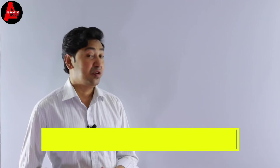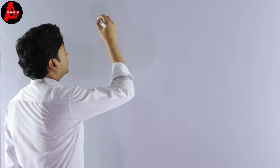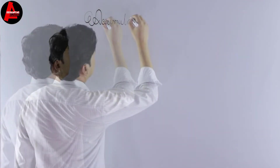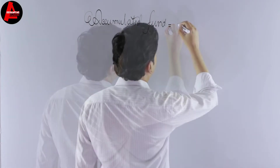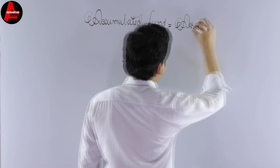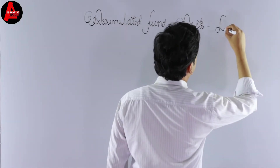So what is the formula to calculate accumulated fund? Accumulated fund equals assets minus liabilities.